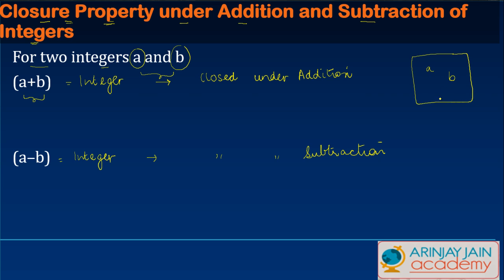When we add a and b, if the result is again lying within the same box, we say that these integers are closed under addition. Whereas if the result lies outside the box, we say they are not closed under addition. The same rule applies for subtraction — if a minus b is lying within this box, we say the integers are closed under subtraction.